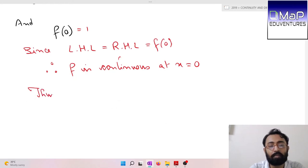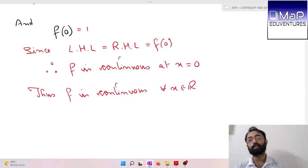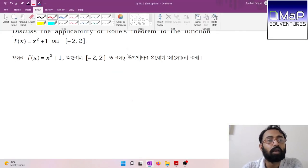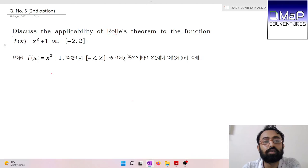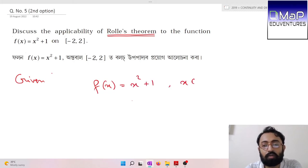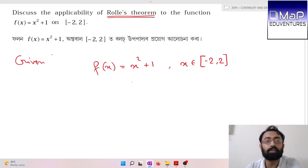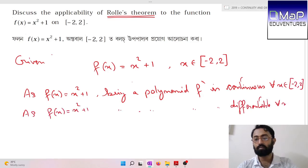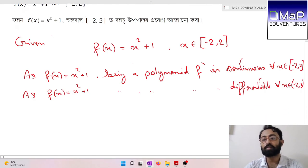Thus f is continuous for all x belongs to real numbers. Next question: Discuss the applicability of Rolle's theorem to the function f(x) = x² + 1 on [-2, 2]. This is our given function.